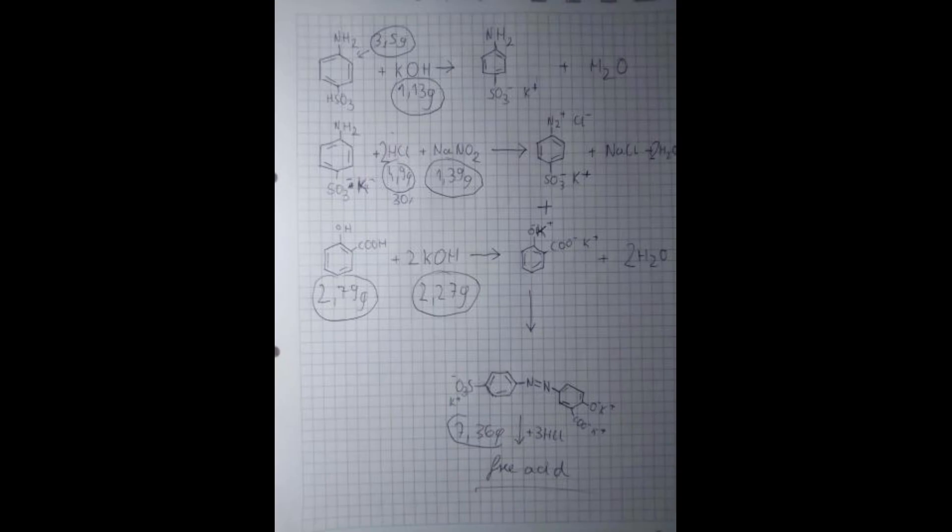As you can see I have calculated all the amounts of chemicals. The first step is going to be a neutralization of the sulfanilic acid with potassium hydroxide. You could of course use sodium hydroxide or sodium carbonate, sodium bicarbonate, potassium carbonate, potassium bicarbonate, whatever you want really. I'm using potassium hydroxide because I ran out of sodium hydroxide.